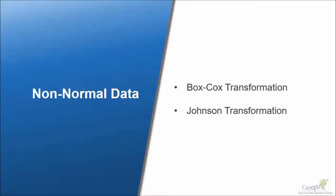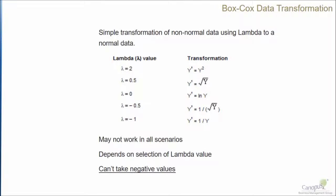Box-Cox transformation is one of the simplest transformations. What it does is it uses a value called lambda to transform data that is non-normal to normal data.